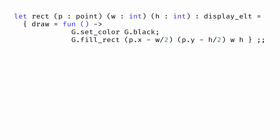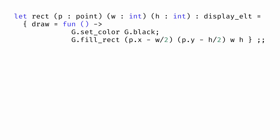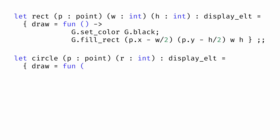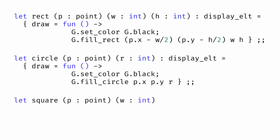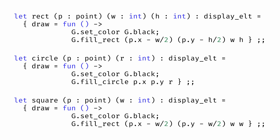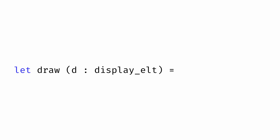We could use similar logic for defining functions for circle and square as well. Each is a function that takes arguments for the position and size of the shape and then returns a display element. The advantage of making sure all of these values share the same type displayelt is that we can write code that works with displayelt, and that code will work with rectangles and squares and circles and any other future values of this type that we define later. For example, we could write a function draw that accepts any display element as its argument and works just by calling the function in the draw field of the display element itself.